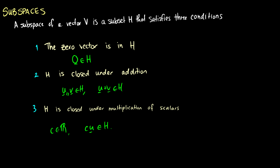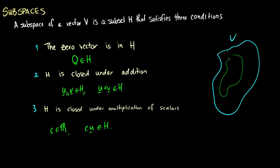For instance, if we have our abstract vector space V, then the subspace H is going to be a smaller part of it.